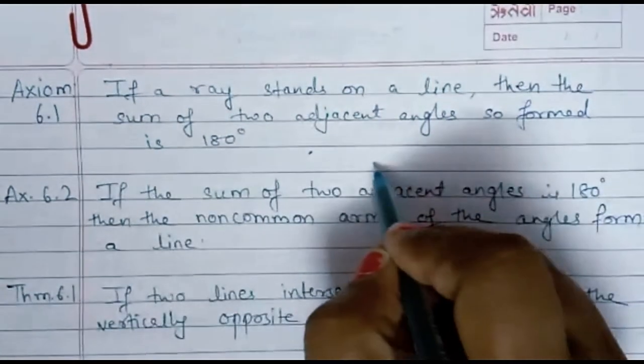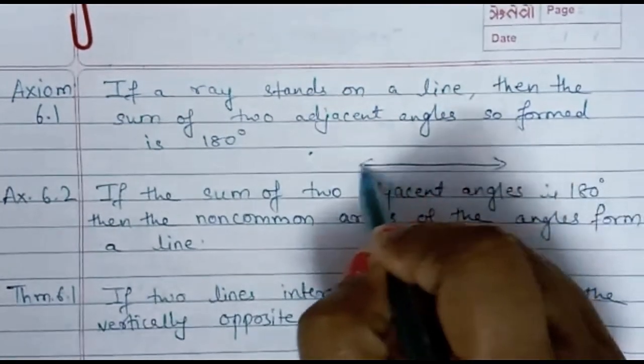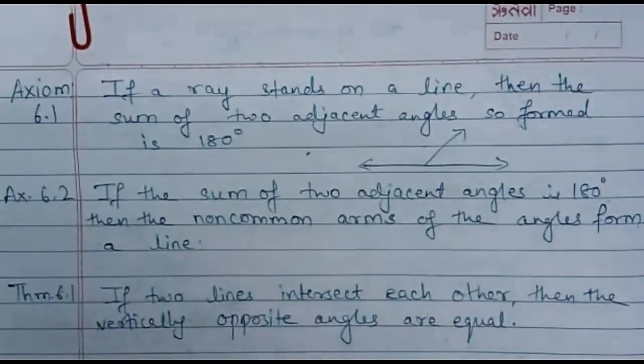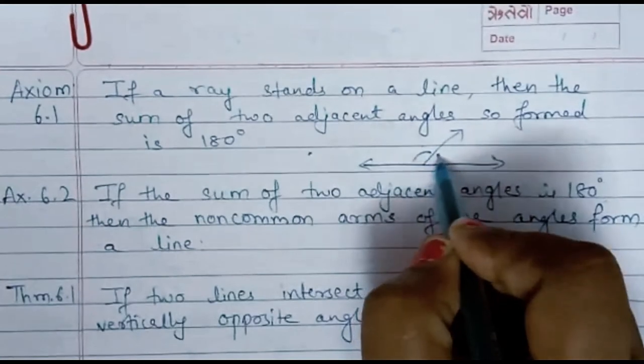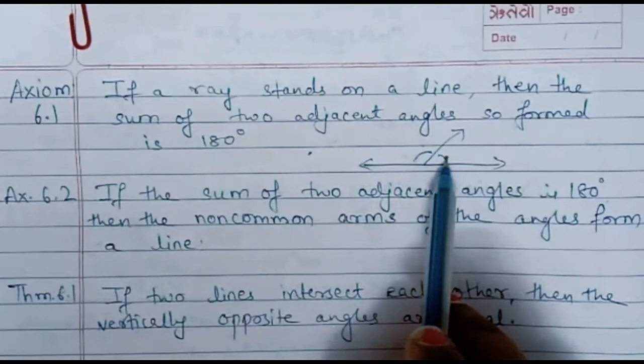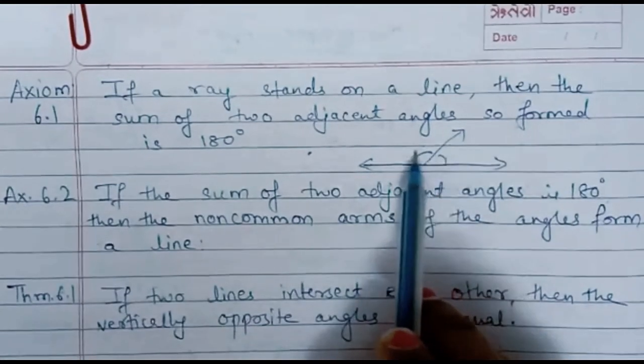That means if you have a line and a ray is there anywhere on the line, you can see two angles formed over here will have the sum of its measure as 180 degrees. Suppose this is 60, so this will be 120 degrees.